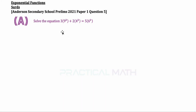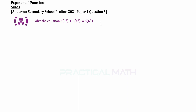For part A of this question, we are presented with an exponential equation of the same powers of k, but they are of different bases. On the left, we have bases of 9 and 4; on the right, a base of 6. To solve for the value of k, we will need one of the laws to change all the bases to be the same, or at least link up the bases.